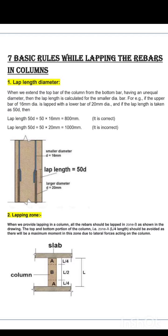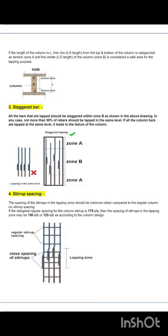The lapping zone is very important for site engineers as it plays a vital role in the structural stability of the column. If the total length of the column is L, then the L/4 length from the top and bottom is categorized as tension Zone A. The center L/2 length of the column, Zone B, is considered a safe area for lapping purposes, as you can see clearly in the figure.